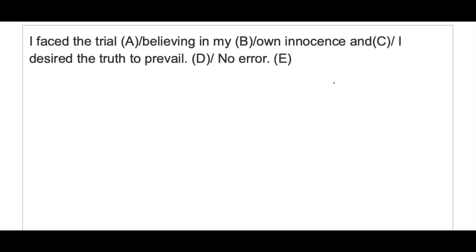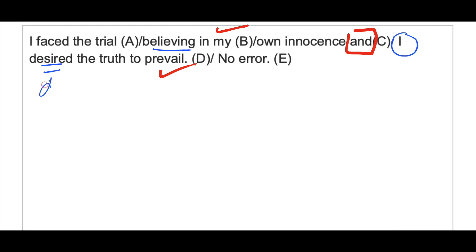Example: 'I face the trial believing in my own innocence and I desire the truth to prevail.' Here the connector 'and' connects two parts. The first part has 'believing' — an ing verb. So for parallelism, the second part should also use ing: 'and desiring the truth to prevail' instead of 'I desire the truth to prevail.'